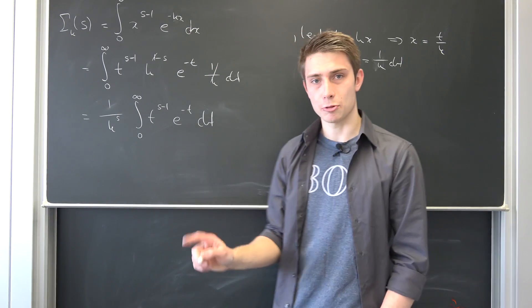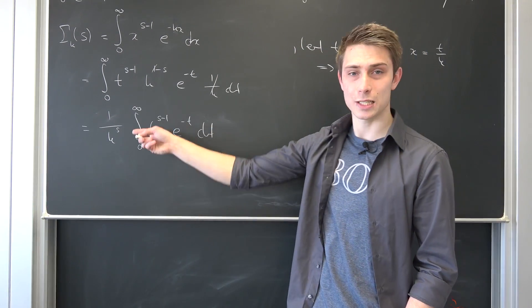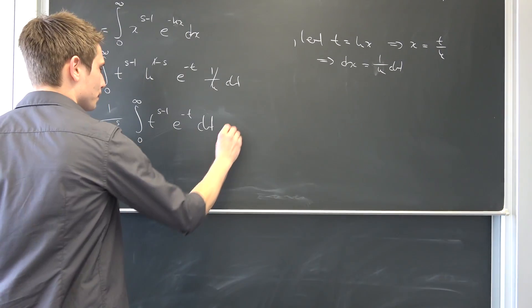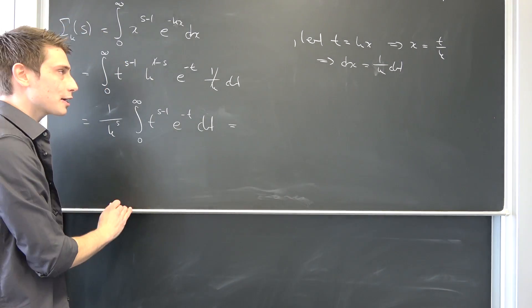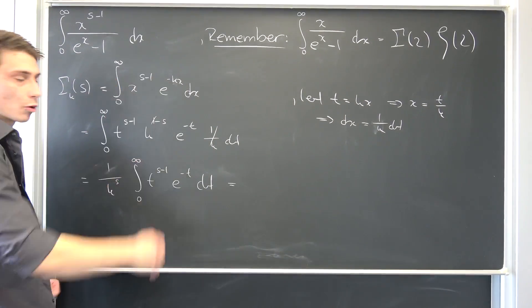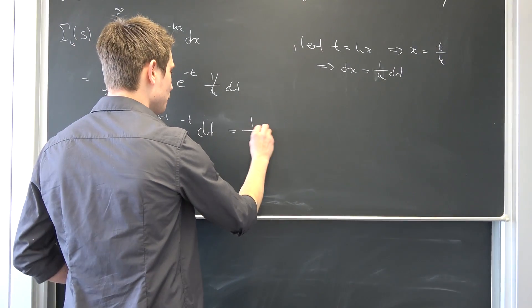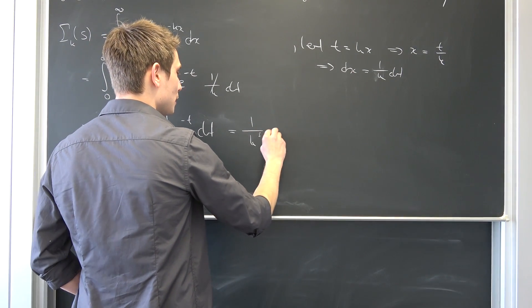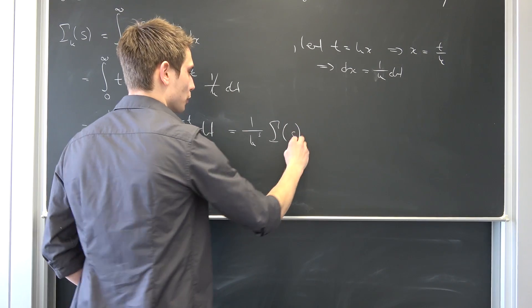And I want you guys to remember something. What is this right here? Well, that's just our good old gamma function. This is the integral representation that we had up here originally. So that's nothing but 1 over k to the s power times, well, our gamma function with respect to s.